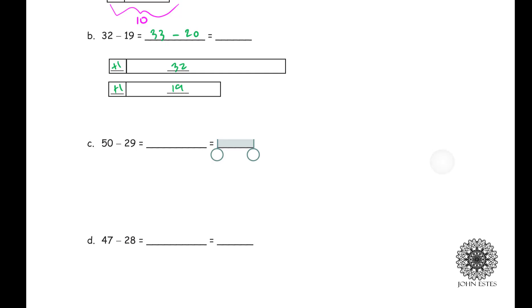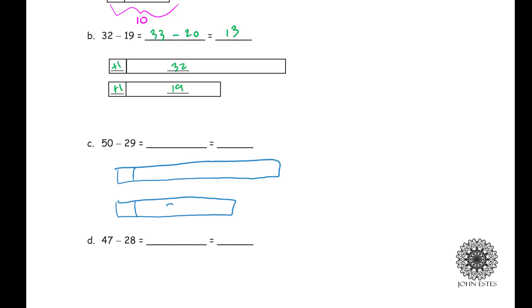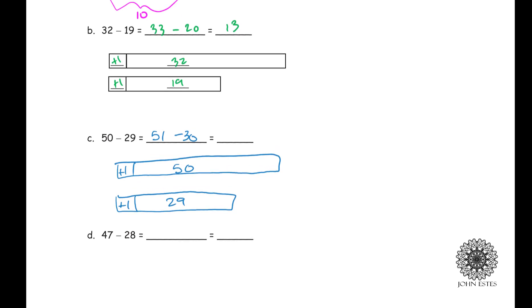Mentally, 33 minus 20 gives us 13 very quickly. Now part C — this time we draw our own diagrams. The bottom diagram has 29 and the top one has 50. I don't want to subtract 29, so I add 1 to get minus 30 in the new sentence. Adding 1 to 29 means I also add 1 to 50, giving me 51. So 50 minus 29 becomes 51 minus 30, and I can quickly see the answer is 21.